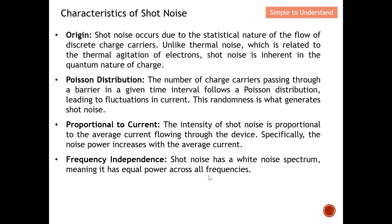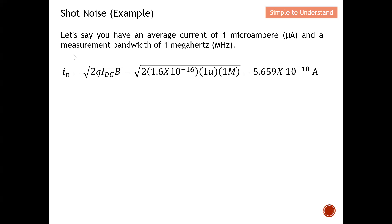Here is an example of how to calculate shot noise. Given a current of 1 microampere and a measurement bandwidth of 1 MHz, using the formula with q = 1.6 × 10⁻¹⁹ coulombs, current = 1 µA, and bandwidth = 1 MHz, we can calculate that the shot noise is 5.659 × 10⁻¹⁰ amperes RMS.